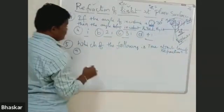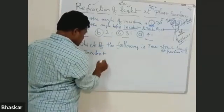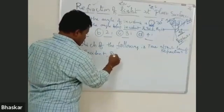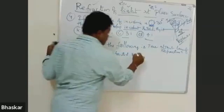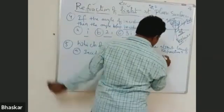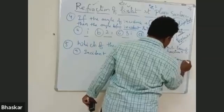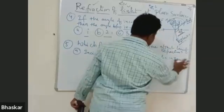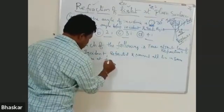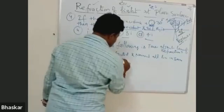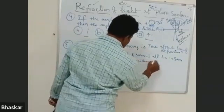Option A: Incident ray, refracted ray, and normal all lie in the same plane at the point of incidence. Next.